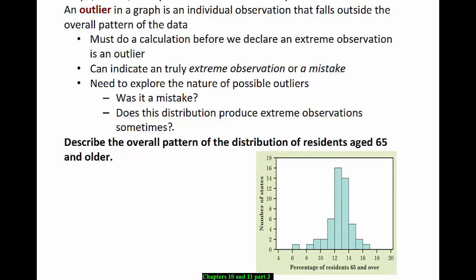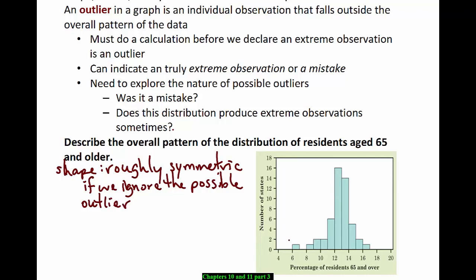So now let's describe this distribution by its overall pattern. So we need to talk about shape, center, and spread. So we would say that the shape is roughly symmetric if we ignore the possible outlier. If we got rid of this one right here, the rest of that distribution looks roughly symmetric.